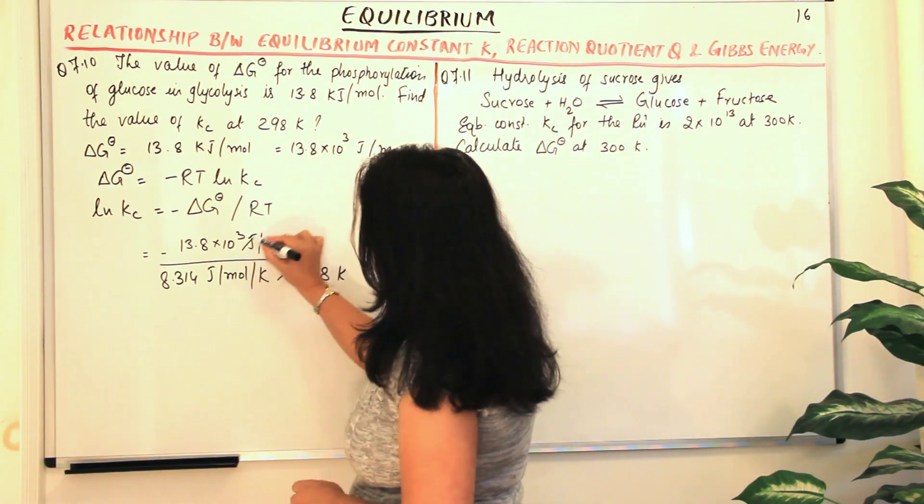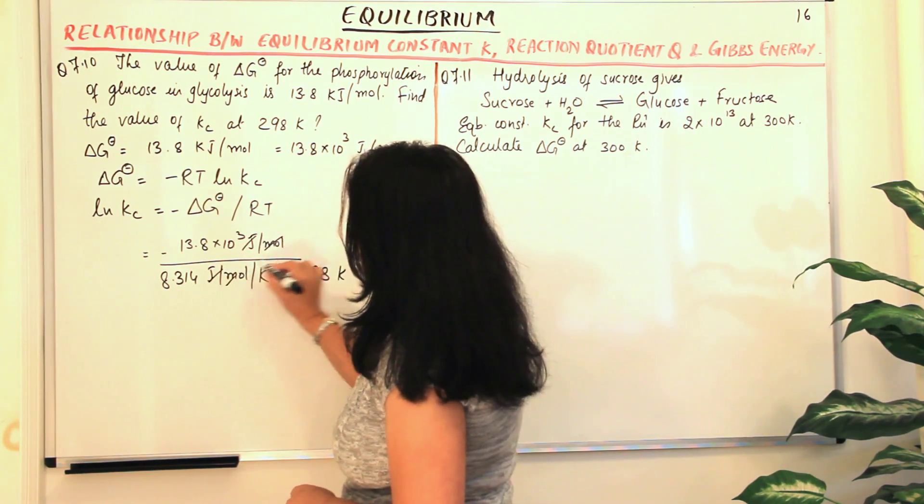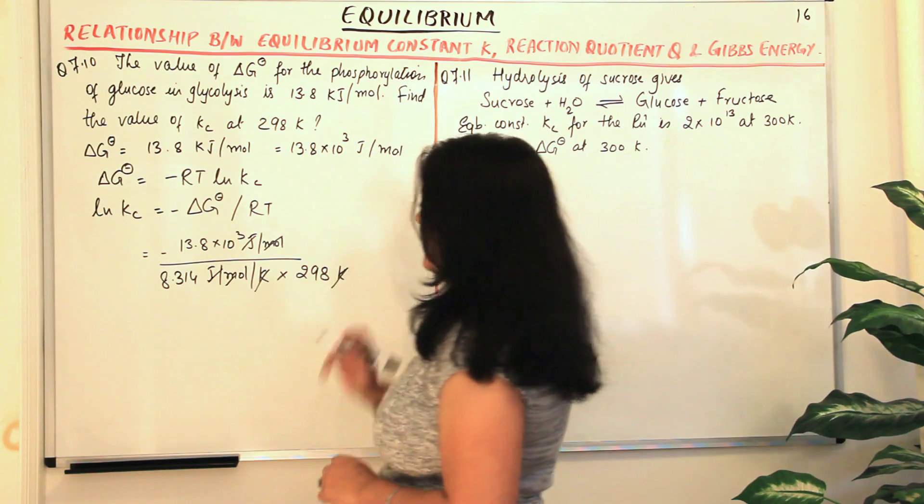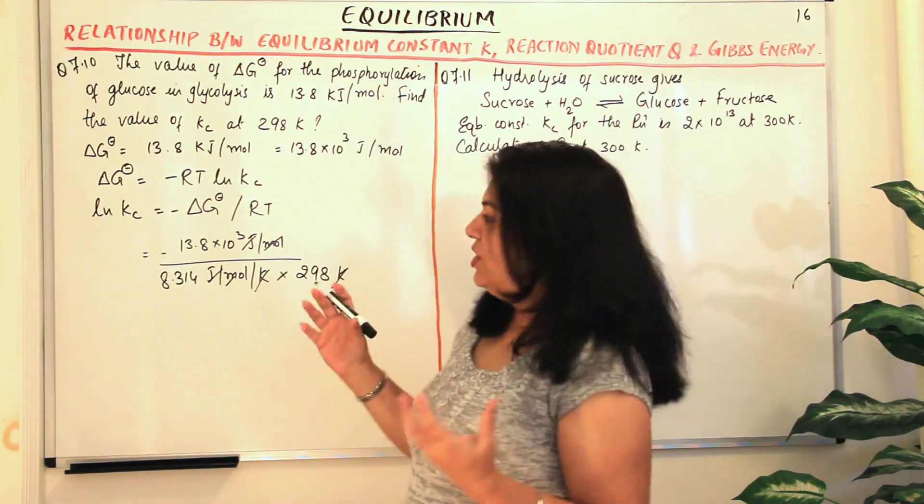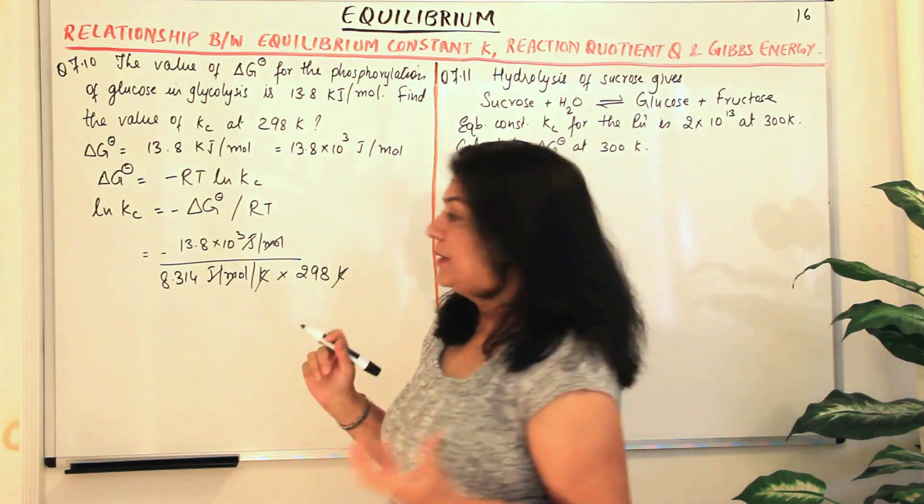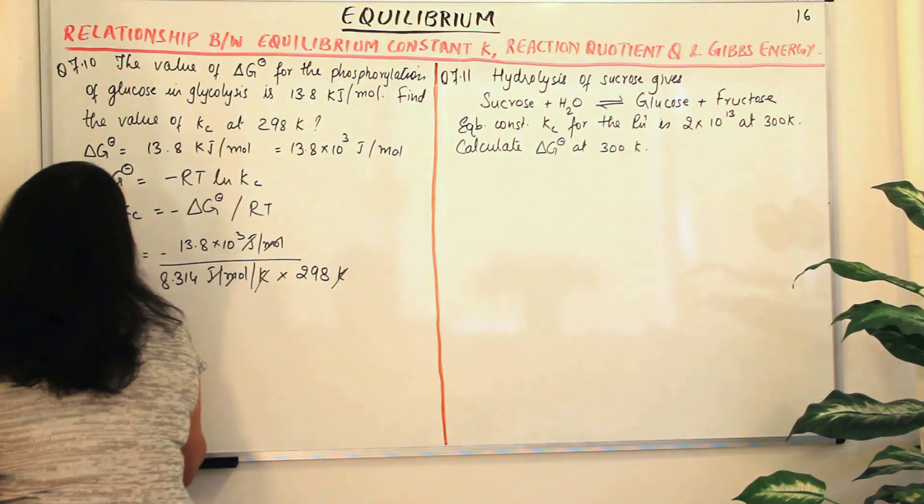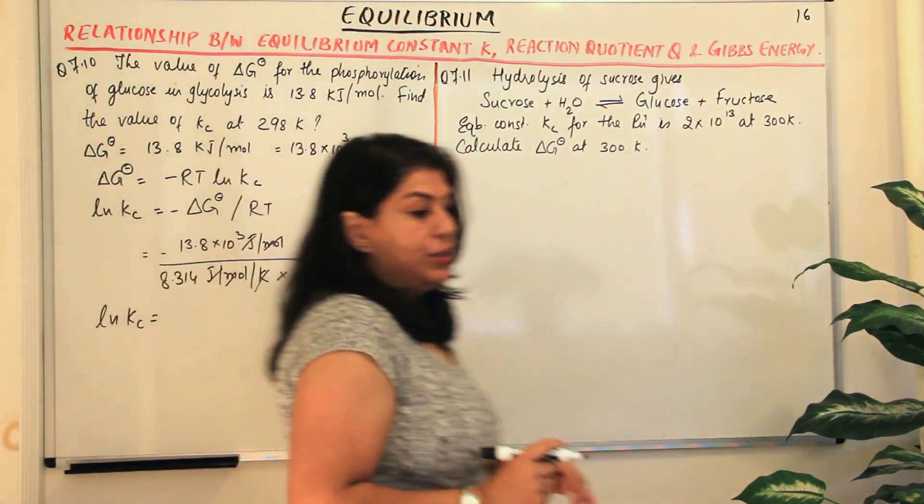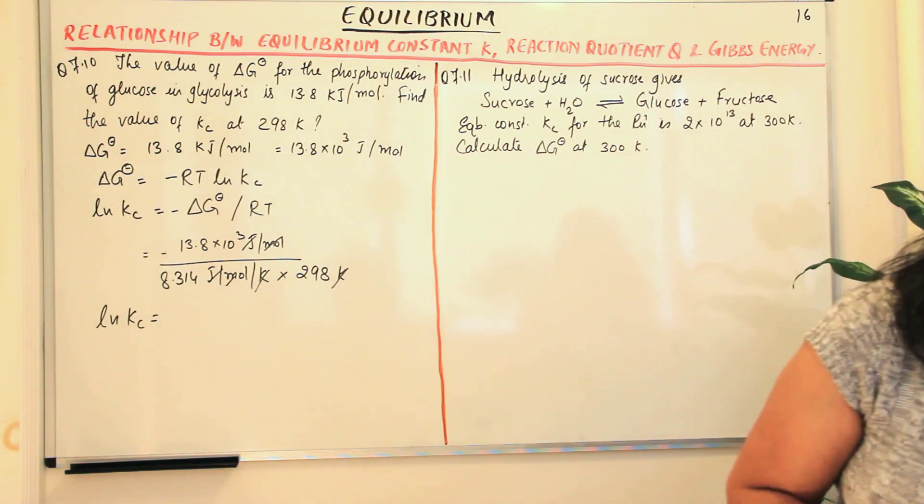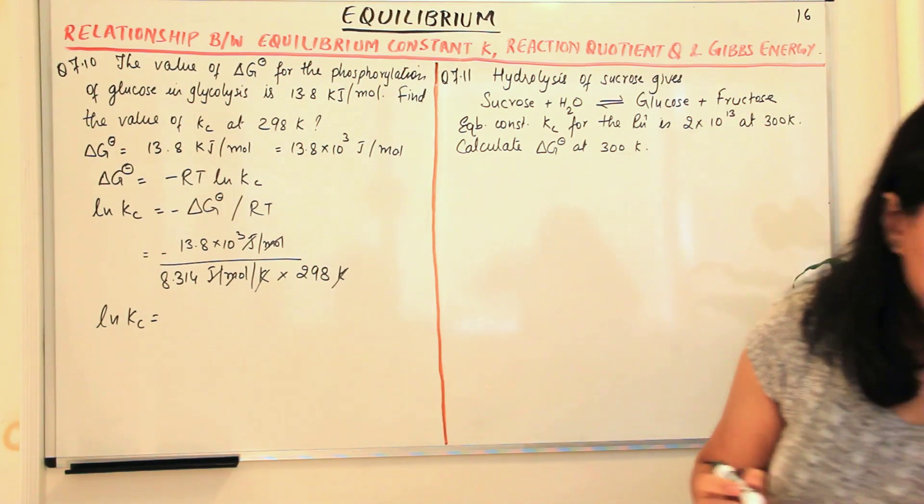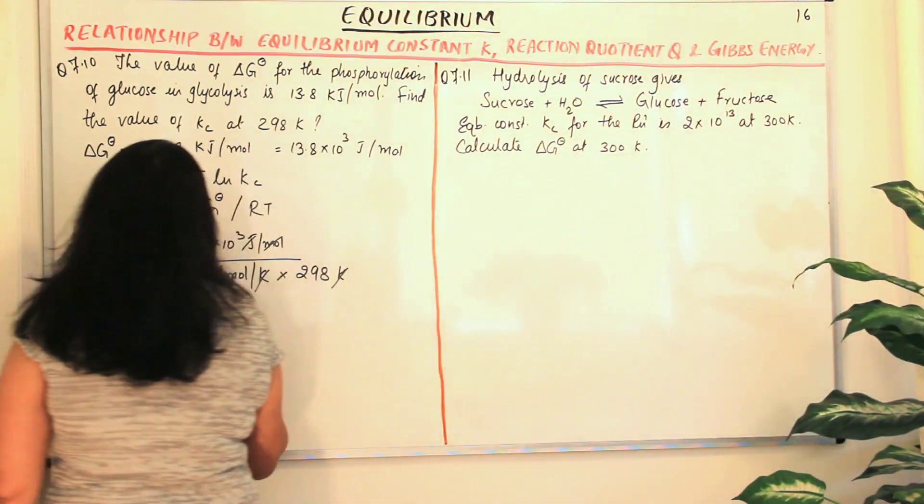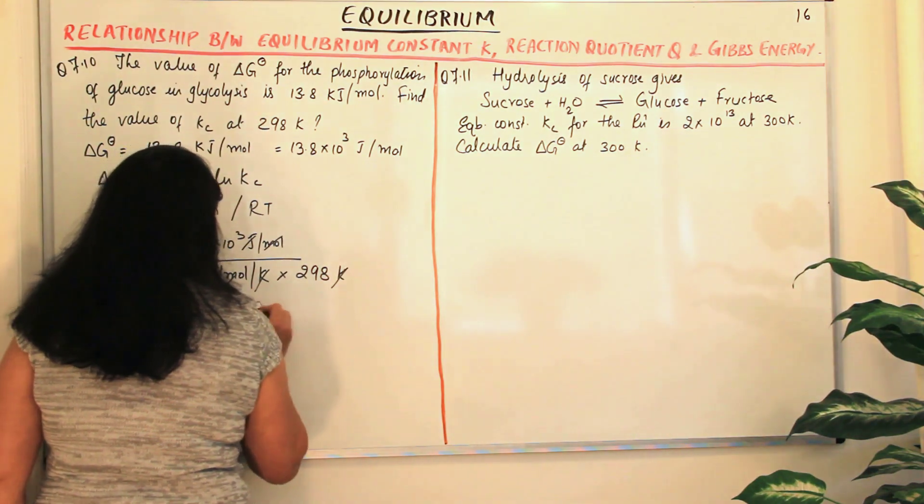Now look at the units. The joules per mole get cancelled, per Kelvin and Kelvin get cancelled. And ln Kc should be a numerical value, a number. And that's what we get when you solve this. ln Kc comes out to be equal to minus 5.569.